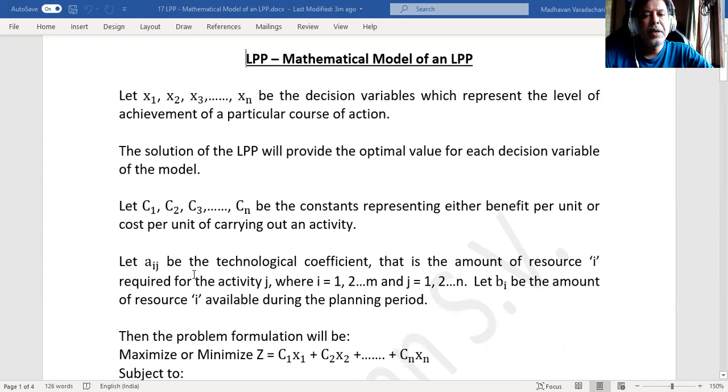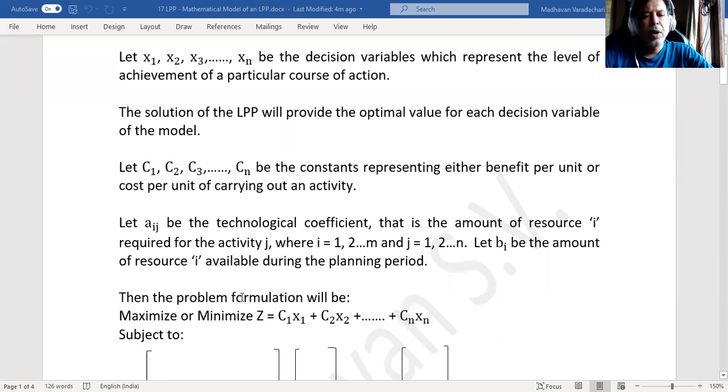Let aij be the technological coefficient, that is the amount of resource i required for the activity j, where i takes the values from 1 to m. If I create a matrix, it will have m rows and n columns. Let bi be the amount of resource available during the planning period.